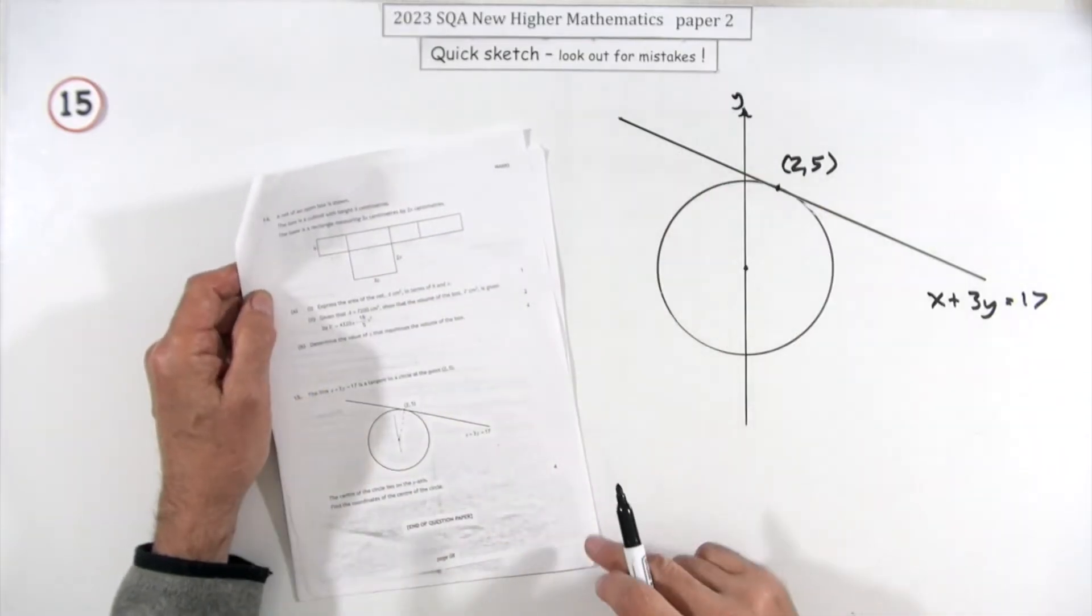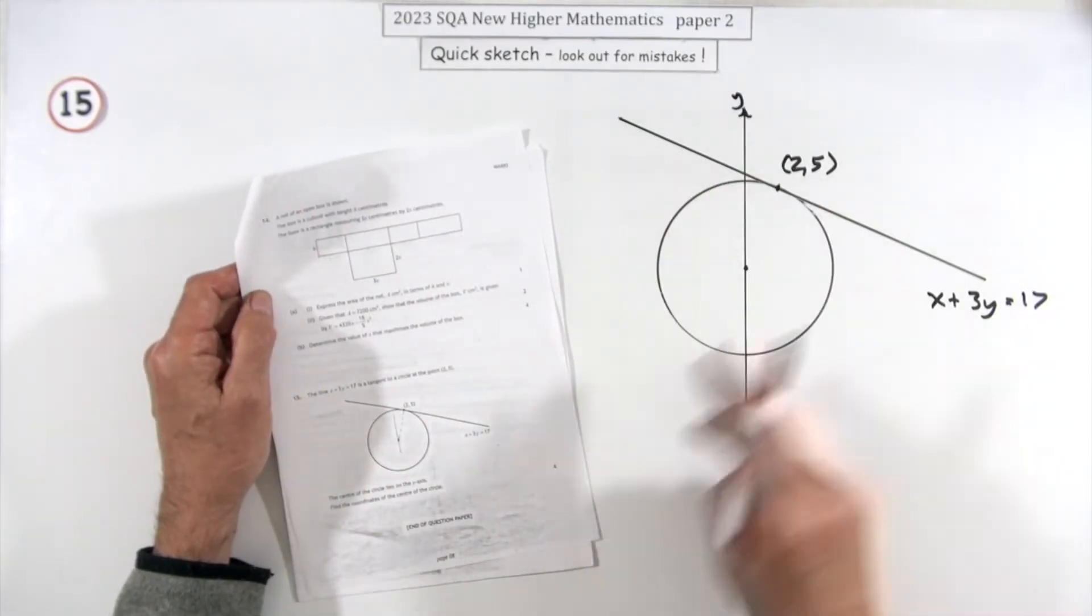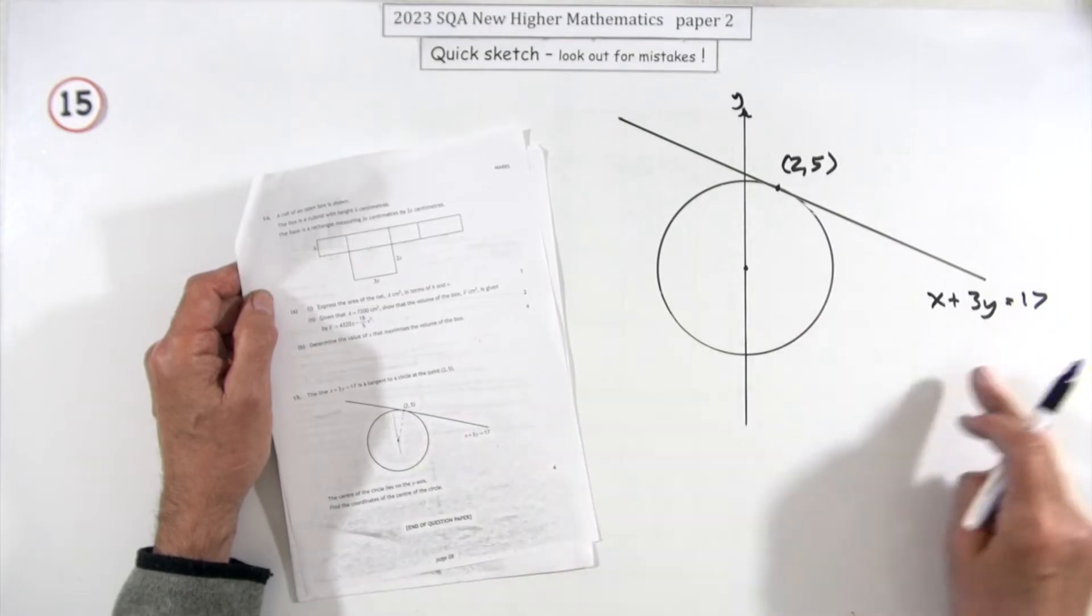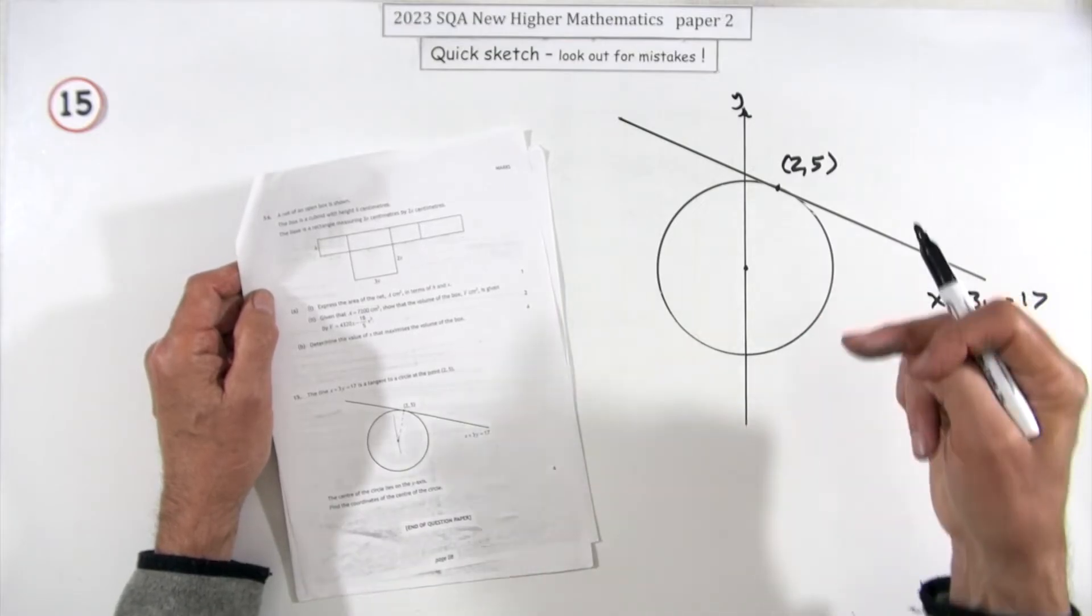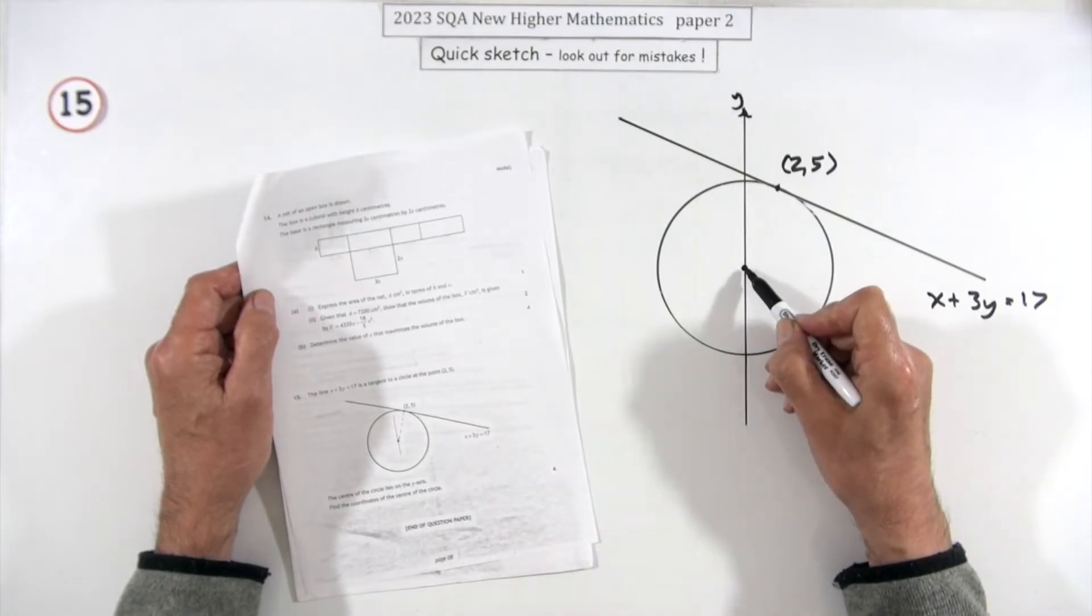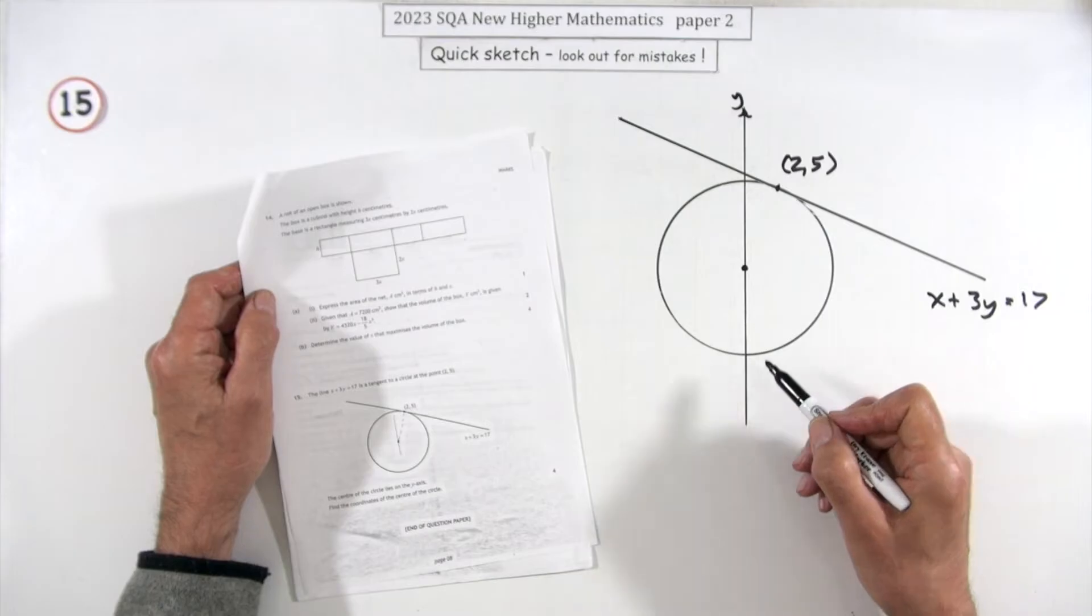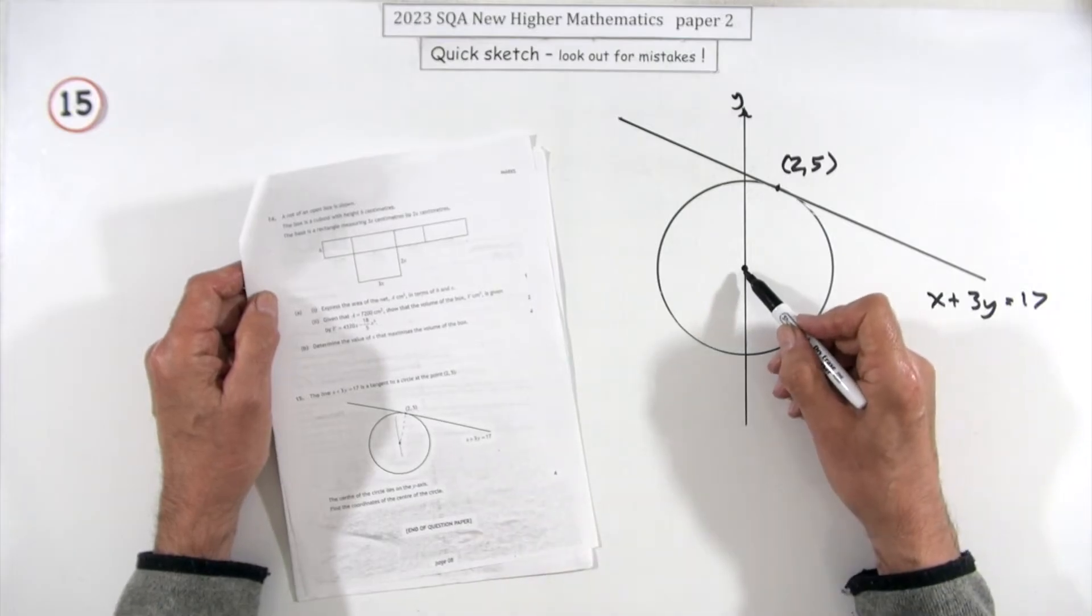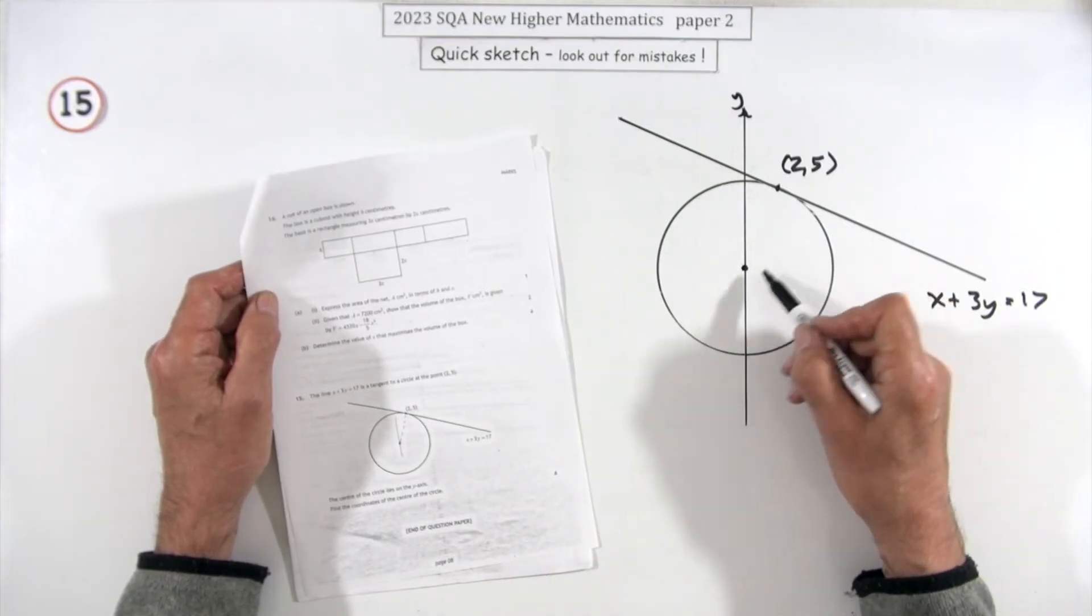So question 15 here, the last question in paper two, four marks, a tangent to a circle. You've got the answer, so this is just doing those stages backwards. It tells you something about the center of the circle. It says it lies on the y-axis. If that's the case, you've defined its coordinates. We already know it's zero something, so it's zero whatever.